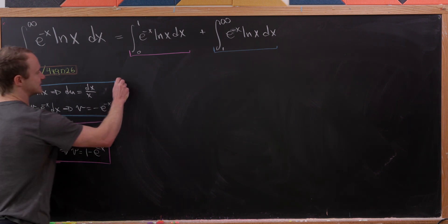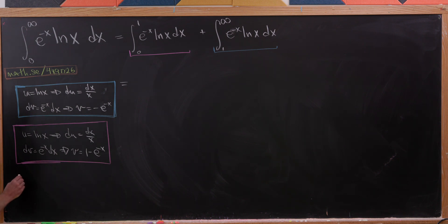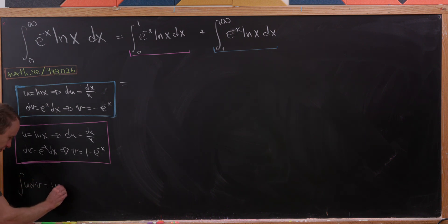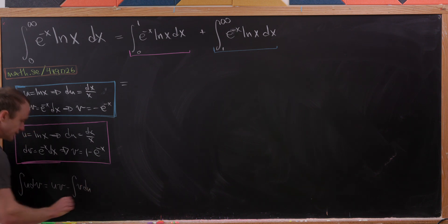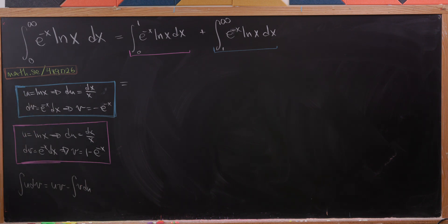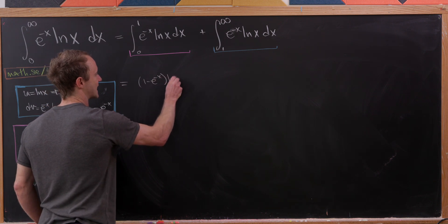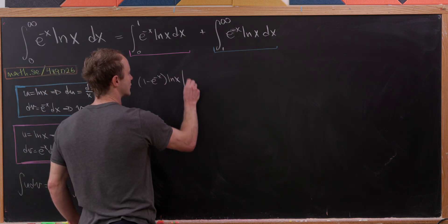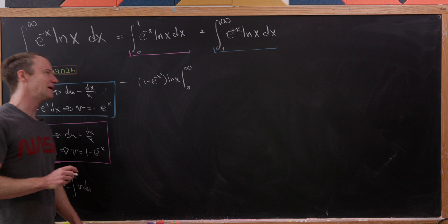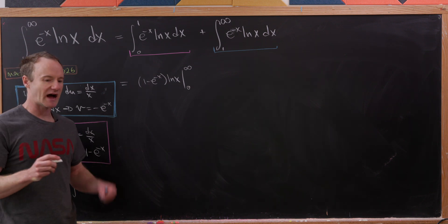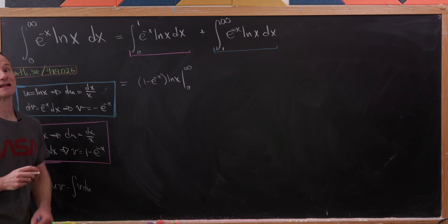So now let's write each of these out. As a reminder, we're using the formula: the integral of u dv equals uv minus the integral of v du — the standard integration by parts formula. Let's write out the magenta part first. We'll have u times v, written as (1 minus e to the minus x) times the natural log of x, evaluated from zero to infinity, keeping in mind that we really have to take a limit at each endpoint.